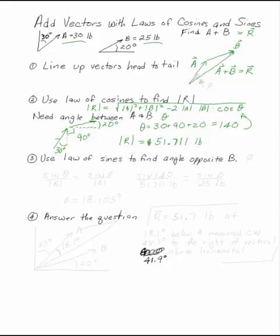Now, we can use the law of sines to find the angle opposite B. So, let's look for this bottom angle down here, angle between A and R. Call it phi. The law of sines says that the sine of theta, which we just found, over the opposite side, is equal to the sine of phi over its opposite side.